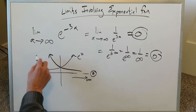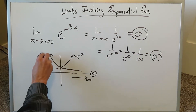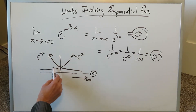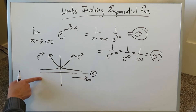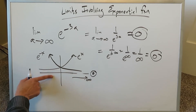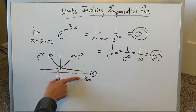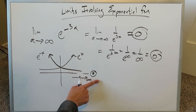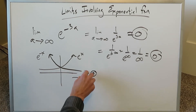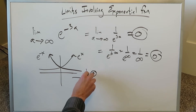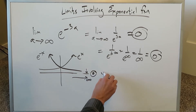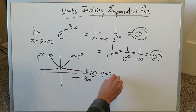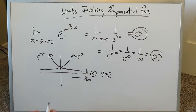Again, looking at the graph of e to the minus x — as you approach x-axis values going towards infinity, this function is approaching the x-axis, which is y equals 0. Your output here should be 0.